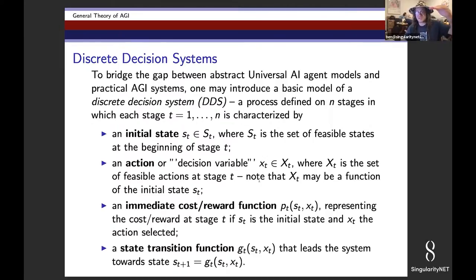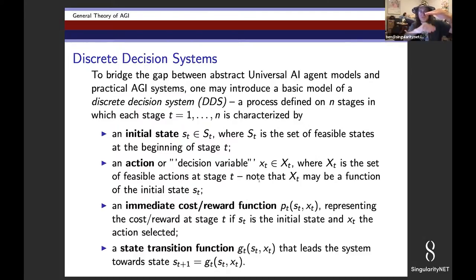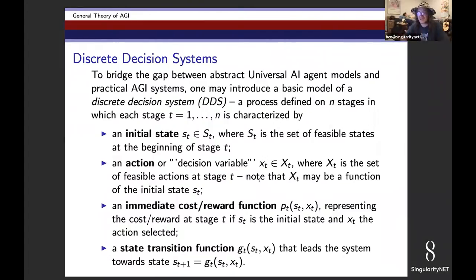In a discrete decision system, you have a system in a certain state. Based on what state it's in, it has a palette of actions it can choose from. Each action it chooses influences the world in a way that brings it some reward or incurs some cost, and as a result of each action the state transitions — it goes into a new state, and from the new state there's a new palette of feasible actions available.